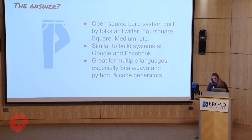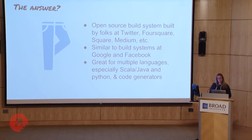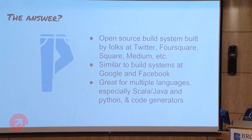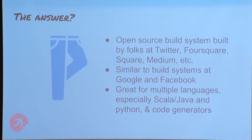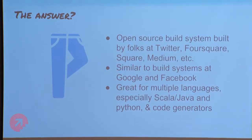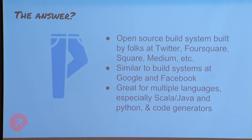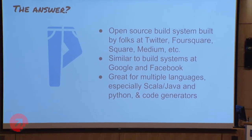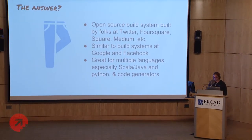Pants is an open source build tool built by folks at Twitter, Foursquare, Square, Medium, and others. It's very similar to and modeled after Blaze, Google's internal build system, now open sourced as Bazel, and is also very similar to Buck. Pants is great for multiple languages, specifically those in the JVM stack. We have support for Scala and Java, and also Python — we have pretty good support for Python. And it has great support for code generators like Apache Thrift. Pants is graph-based, so it uses the connections analyzed between code as dependency relationships — those are the edges. And then we have build definitions, what we call targets, as the nodes in the build graph.